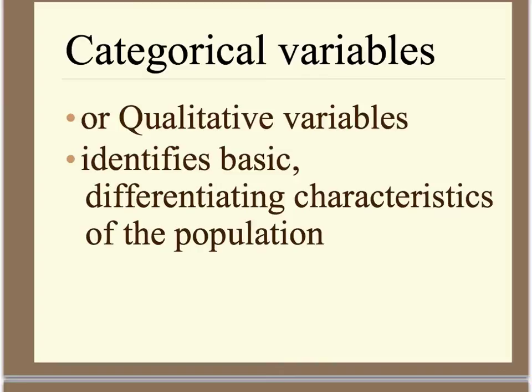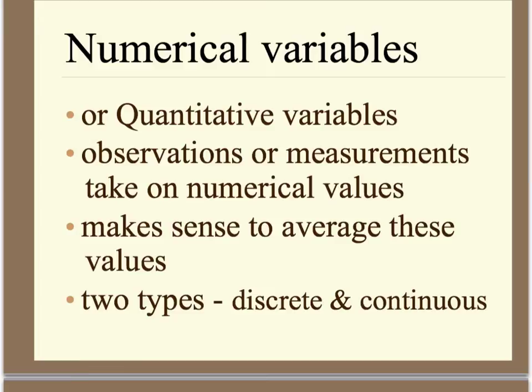Moving on to types of variables, we're going to discuss two different kinds. The first is categorical, also known as qualitative data. This is used when we're talking about words. If we're talking about height as the variable, we'd describe it as short, tall, or medium. If we're talking about age, we'd use a term like senior, teen, or child, instead of a numerical value. The other type is numerical variables, also known as quantitative. They involve numbers, and that's why it makes sense to average them. For height, it would be numerical if we're using a value like 60 inches or 70 inches.